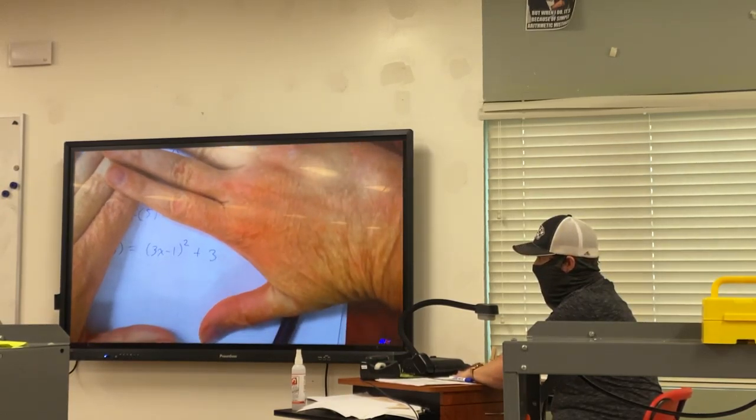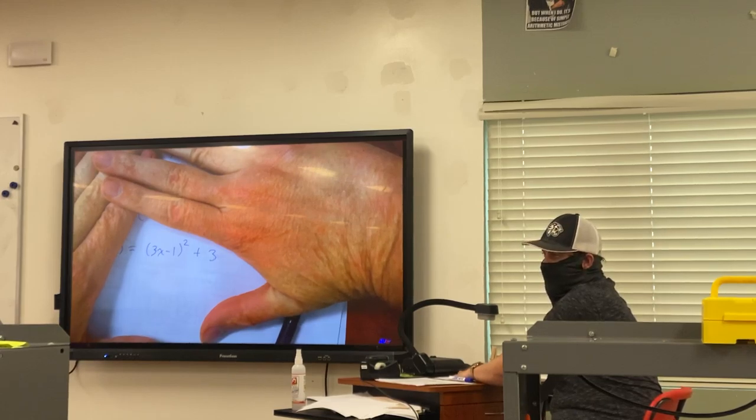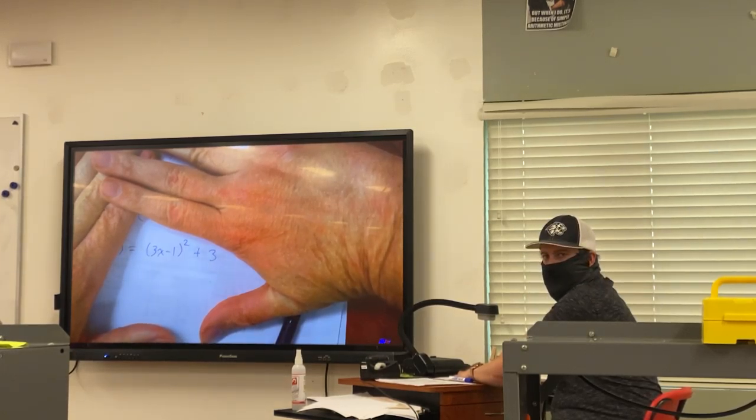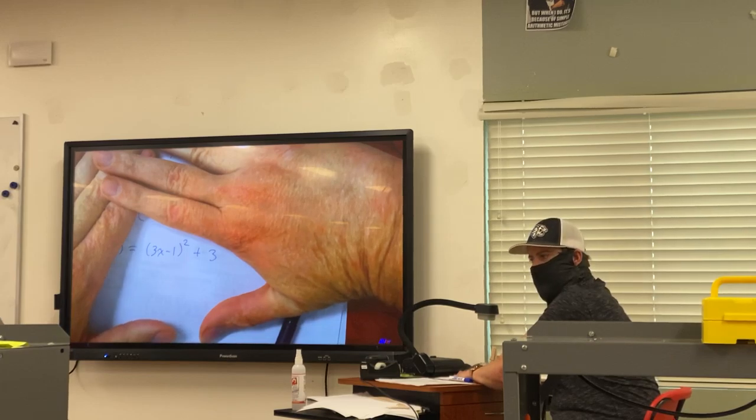But you have to realize when you see 3x squared minus 1 plus 3, that is a composition. Meaning it's one function inside of another function. What function is the inside? The inside is 3x minus 1. Don't worry about f and g. And the outside is doing what? Squaring. And then also plus 3.